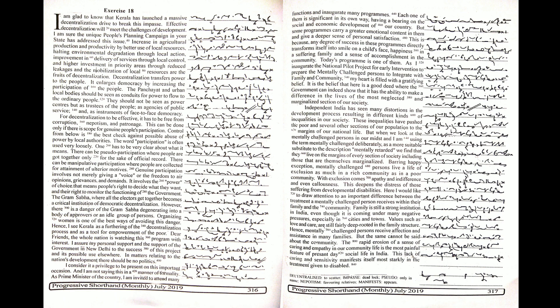For decentralization to be effective, it has to be free from corruption, nepotism, and patronage. This can be done only if there is a scope for genuine people's participation. Control from below is the best check against possible abuse of power by local authorities.